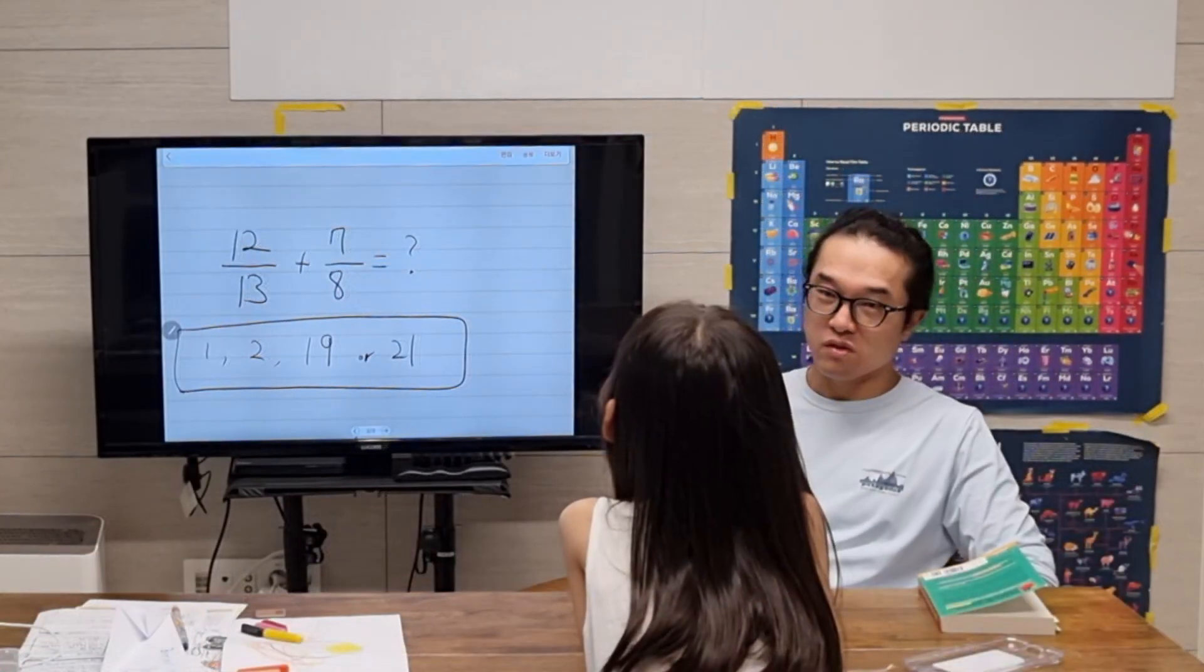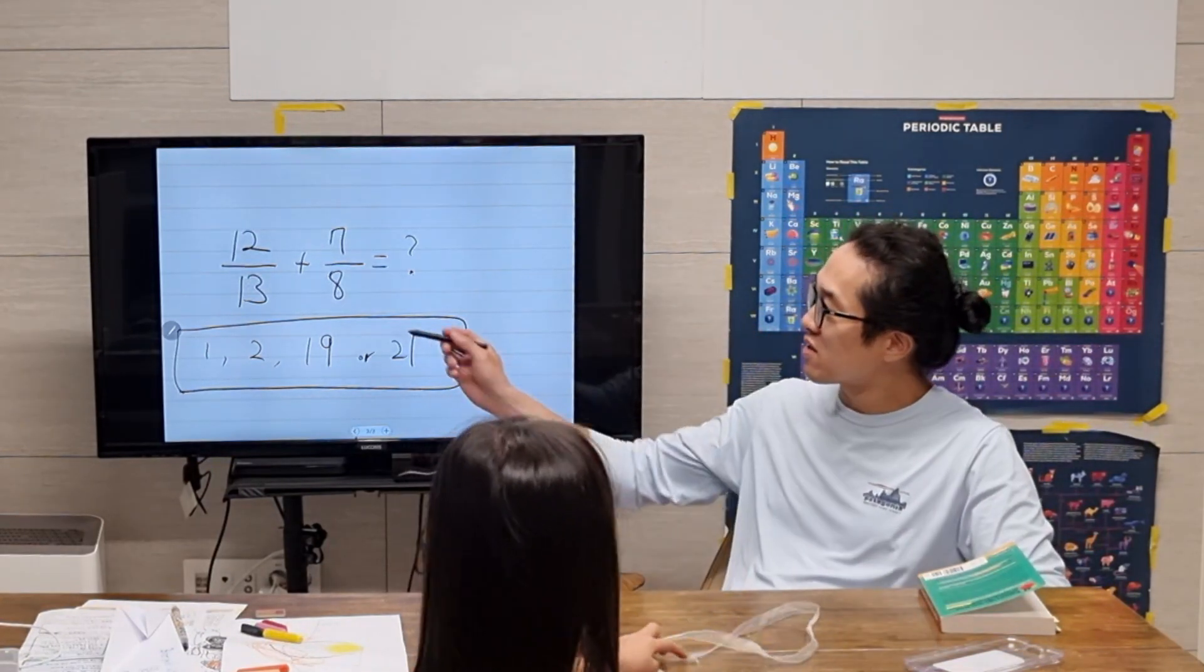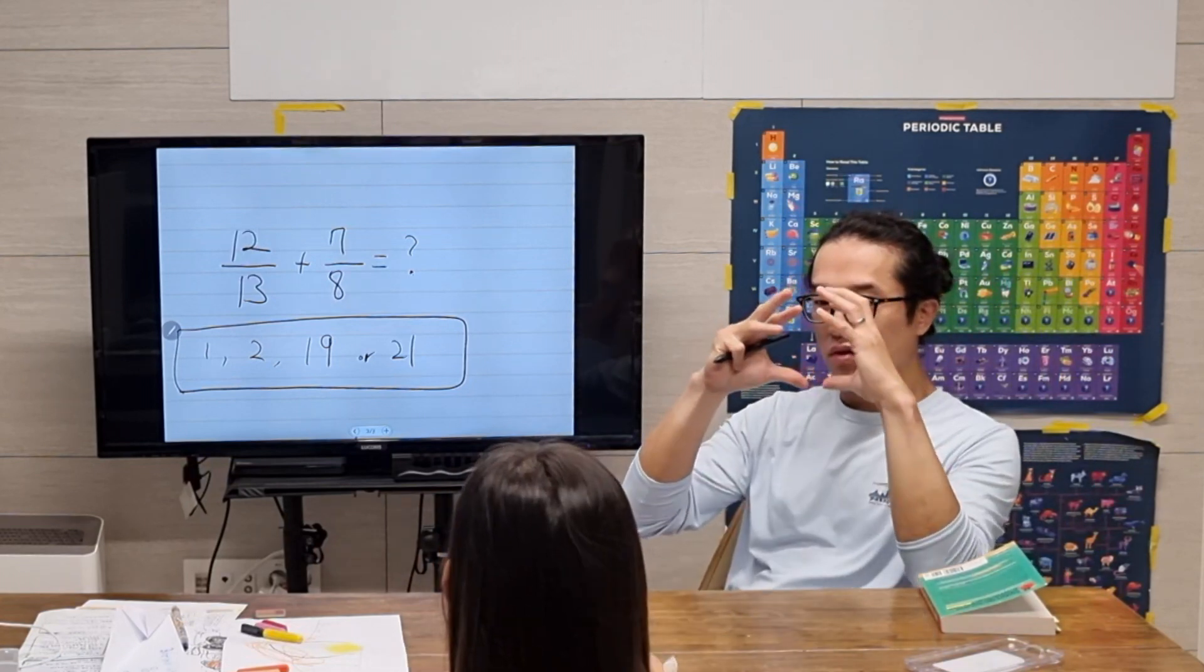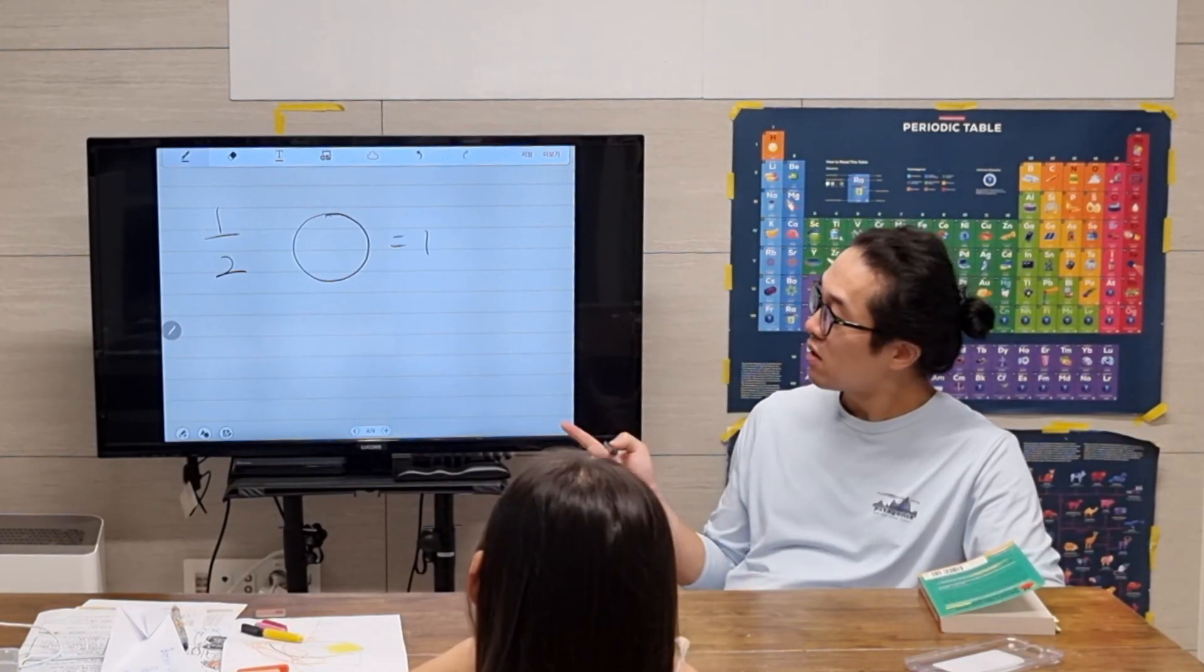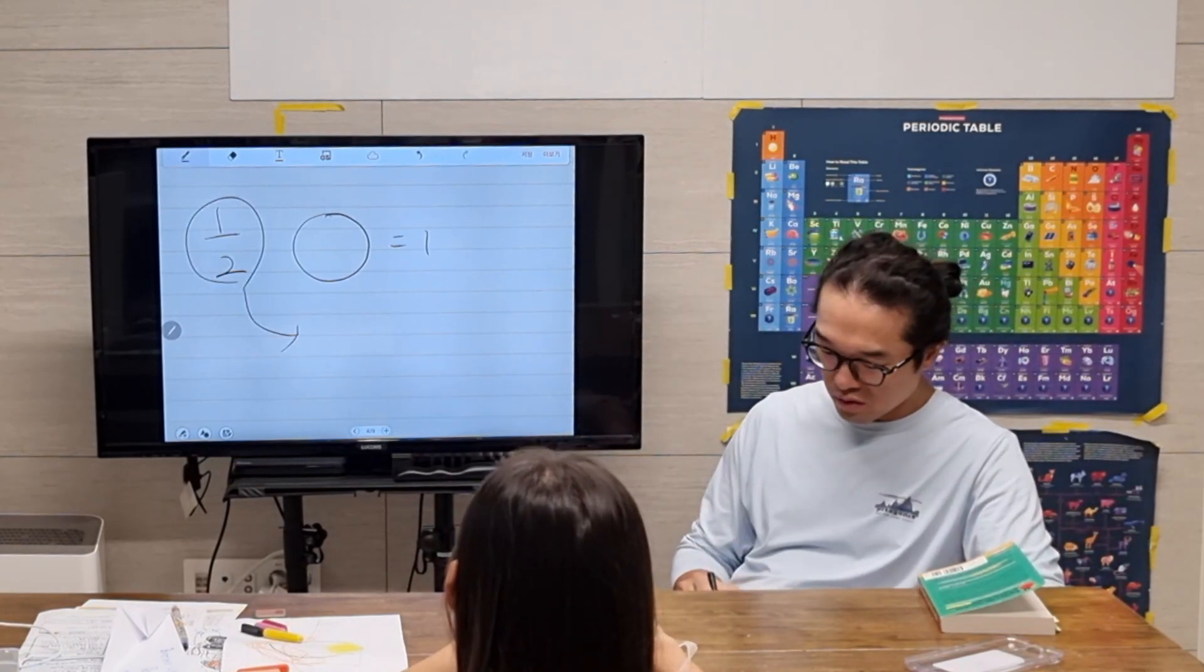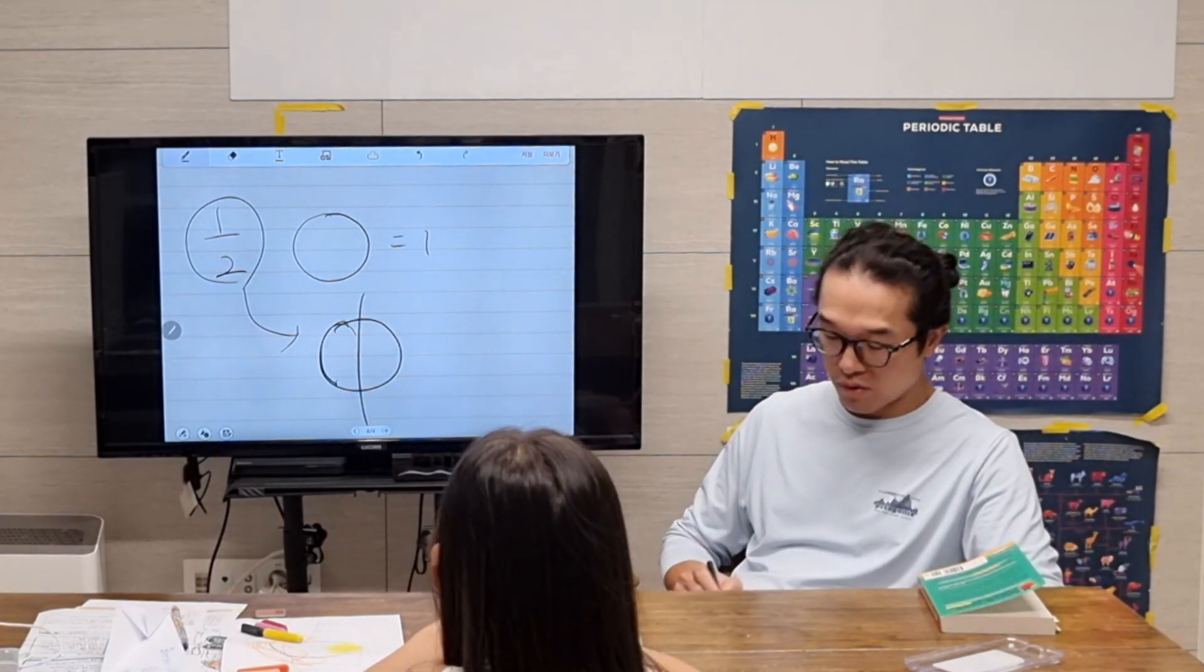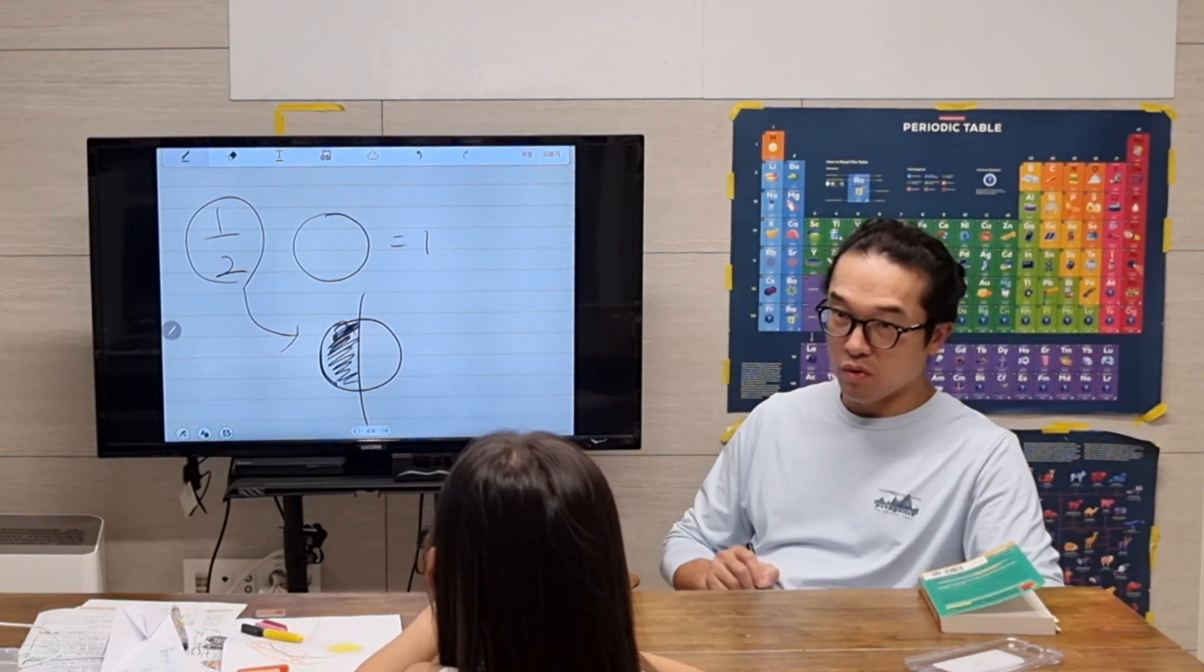Now, back to this problem. There are two fractions. Let's make a circle. It means one. One over two means if you slice this like this, you have this part. This part means one over two, right?